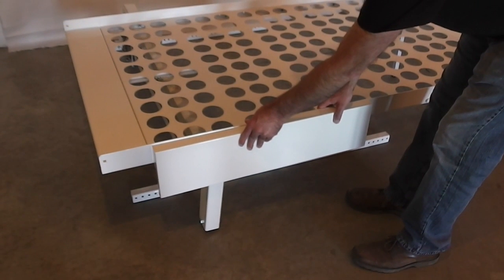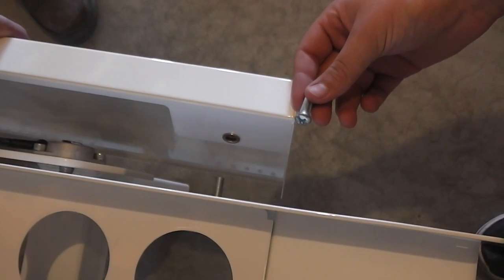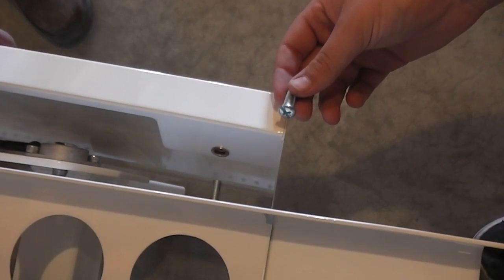The next step is to attach the guard to the front of the platform. Use the round-headed Phillips screws to attach the guard from the inside of the platform.